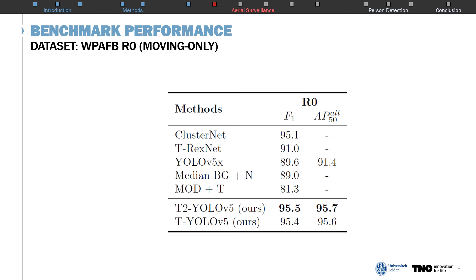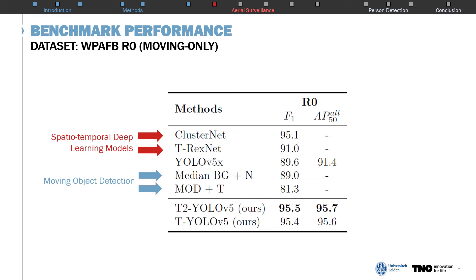We evaluate our models on the highest resolution R0 scale of this dataset, where we focus only on detecting moving objects. Previously used approaches consist of both traditional moving object detection methods based on background subtraction and frame difference, as well as competing spatial-temporal deep learning models. We show that our approaches are effective for detecting small moving objects, outperforming all previous methods and the single-frame baseline.